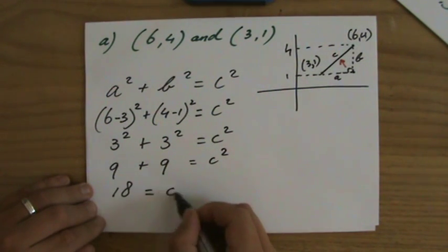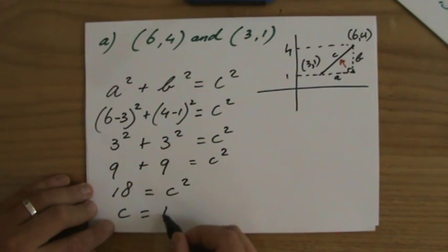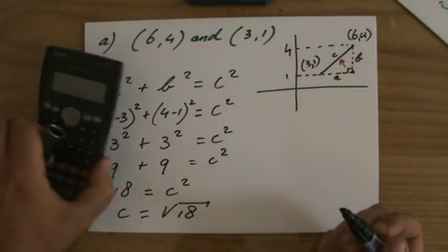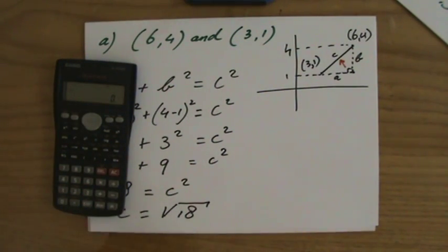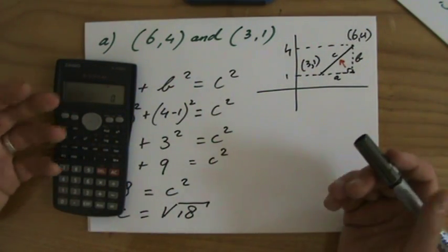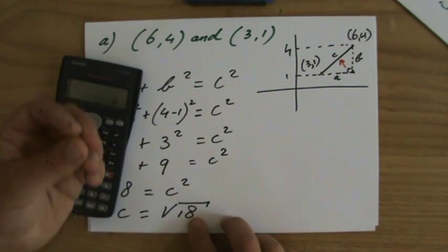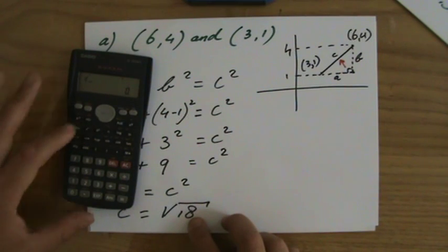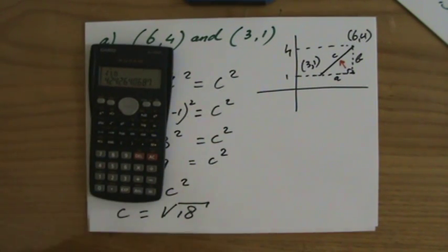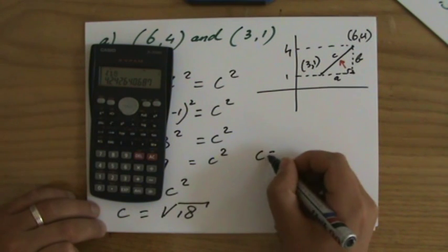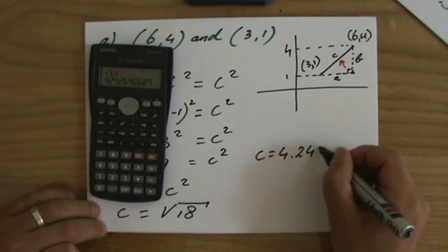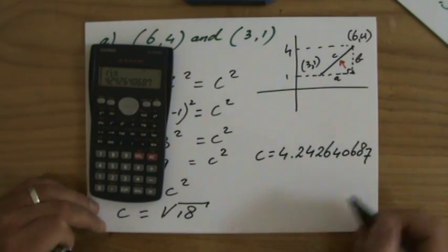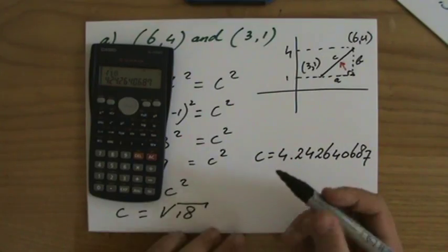Three times three is nine, plus nine equals c squared. Nine plus nine, that will be 18 equals c squared. That makes c the square root of 18. Now if you grab a calculator for that, your answer should be somewhere between 4 and 5, where 4 squared is 16, so it's too little, 5 squared is 25, that is too much. Let's have a look. The square root of 18 is 4.242640687.